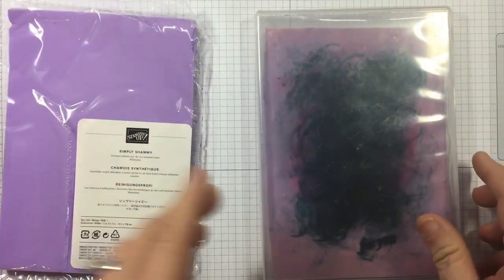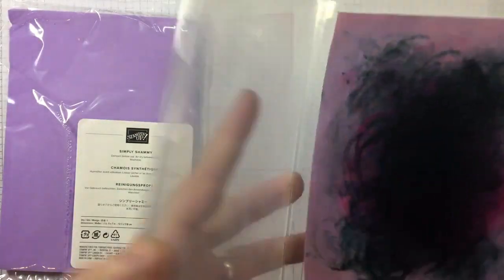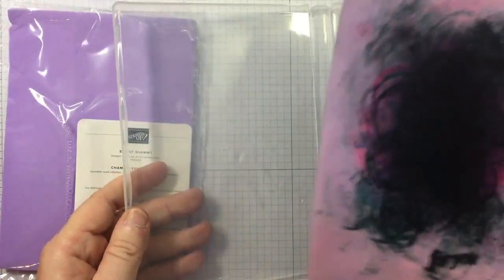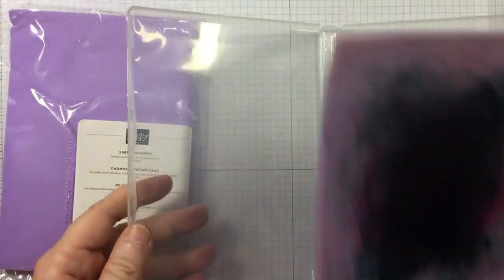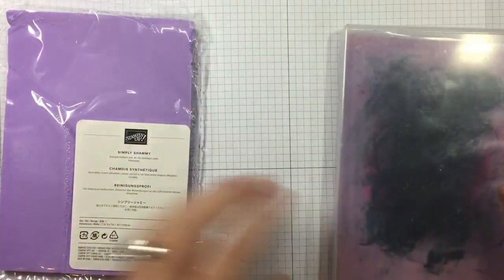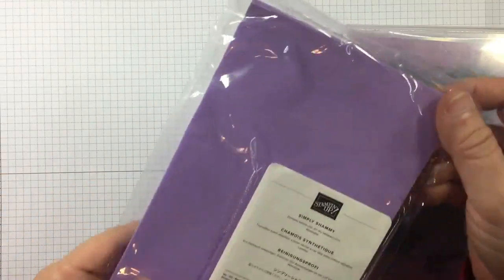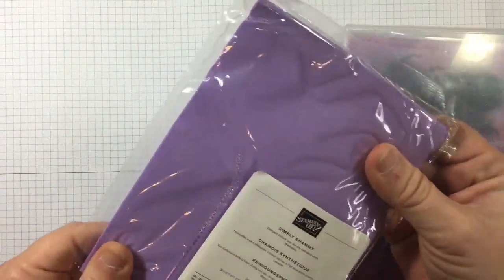The Simply Chamois is a patented cleaning sponge and you can tell that I have used, used, used mine. Now when you receive it, it comes in this, just like this and it's moist, okay?